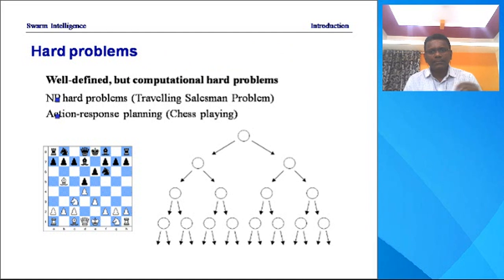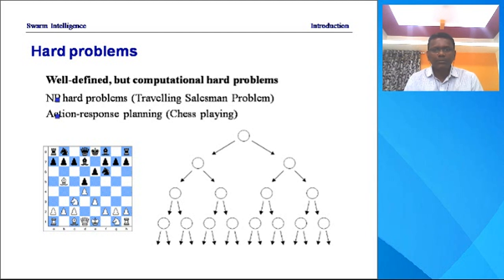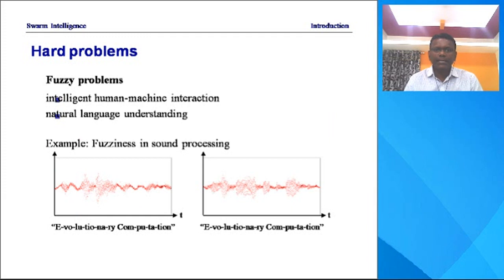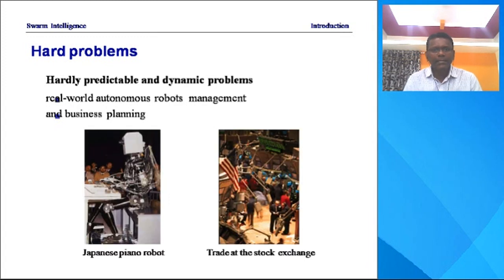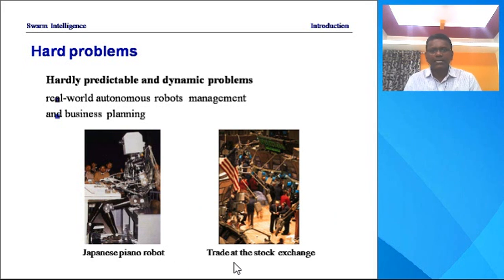There are some hard problems — NP-hard problems or action reasoning planning. An example of an NP-hard problem is the traveling salesman problem. Action response planning is exemplified by chess playing. Another example is fuzzy problems like intelligent human-machine interaction and natural language understanding. These problems are hard, hardly predictable, and dynamic — difficult to tackle with traditional systems.